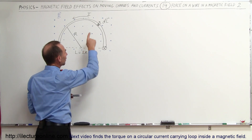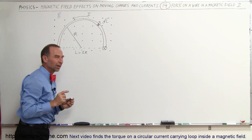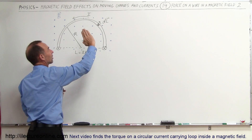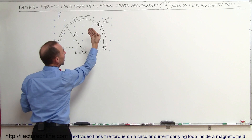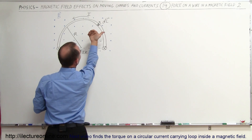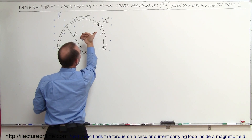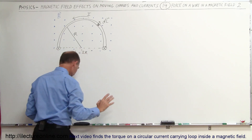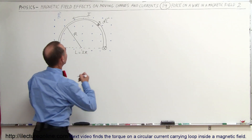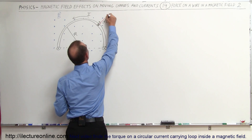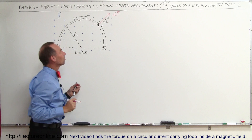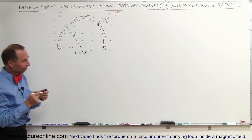Now we want to find out what the force is on that particular segment. We take the right-hand rule: fingers in the direction of the current, then turn your hand to point your fingers in the direction of the B field, and your thumb points in the direction of the force — outward. So you're going to have a force DF in this direction, caused by the small line segment DL inside the magnetic field.